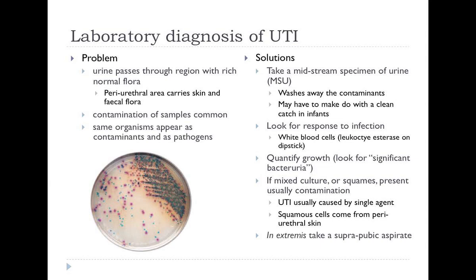The main problem with laboratory diagnosis of UTI is that although urine is sterile, the area through which it passes to get into the specimen pot is most definitely not sterile — it passes through the perineum. Unless the urine specimen is taken carefully, what we get is perineal flora. Unfortunately, these are the same kinds of organisms that cause UTI, so you can get significant confusion between a contaminated specimen and a genuine infection. A mixed growth on selective agar would be recorded as 'mixed flora — probable contaminants' and no sensitivities would be issued.